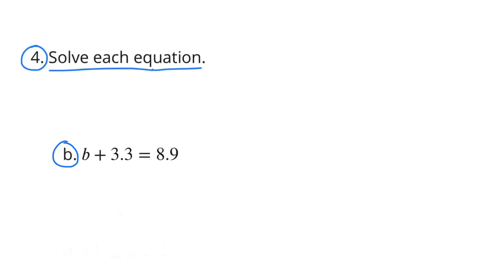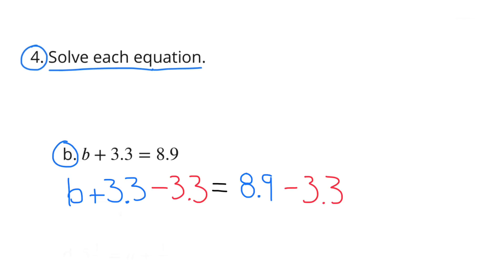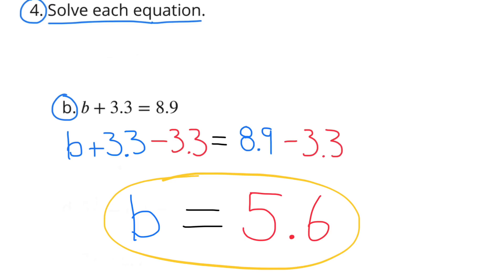B. B + 3.3 = 8.9. Since we're solving for B, we subtract 3.3 from both sides: B + 3.3 − 3.3 = 8.9 − 3.3. That leaves B by itself, and 8.9 − 3.3 = 5.6. So B = 5.6.